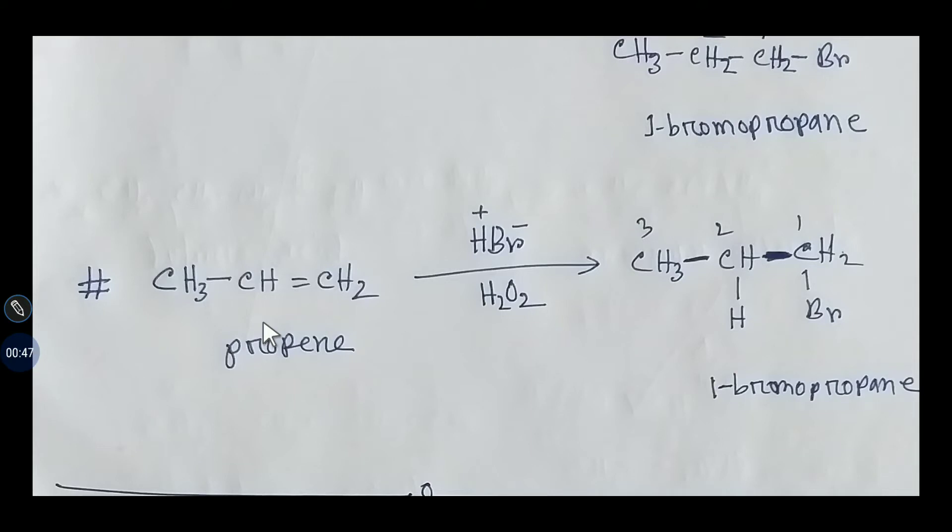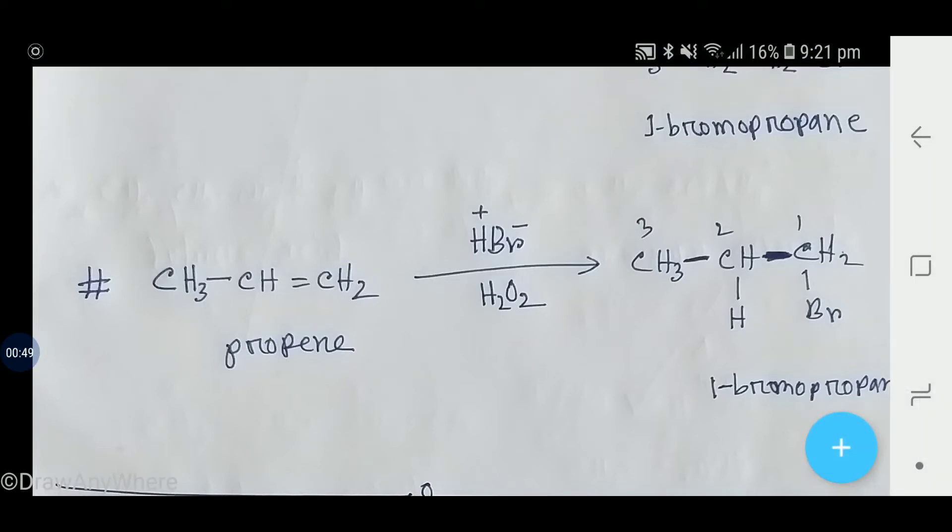You see that this is propene, and propene is an asymmetric alkene because the number of hydrogen is different between the carbons that have double bond.